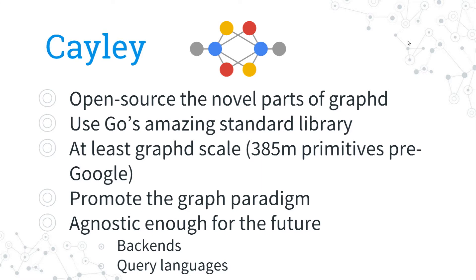So I took the idea and said, let's open source the novel parts of GrafD — what was really interesting about it — and we're going to use Go as our standard library because it works really well. Make sure we can at least scale to about what GrafD was while we were a startup, which is roughly 385 million triples. And also just promote graphs in general, be agnostic enough for the future, new query languages, new data stores that come out, and make sure we can plug all these things together.